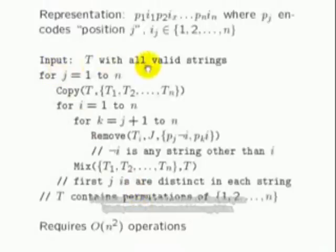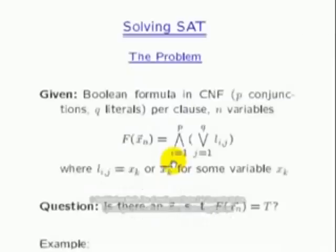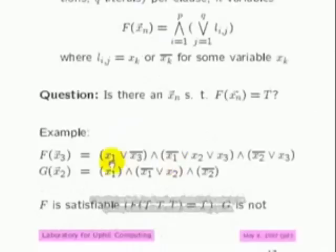Look at this. Input T with all valid strings, for J equals one to N. Copy. And then look at this mathematics here. Remove. Is any string other than I? Mix. First, J is distinctive string, blah blah blah. Look at this. This is the mathematics of DNA. Look at this mathematics. Look at it. This is going on in every cell in your body right now. You see mathematics alone.